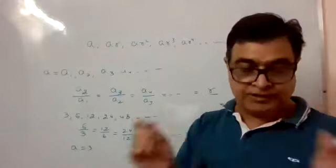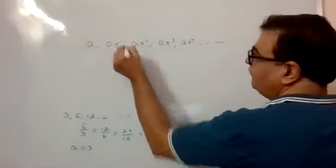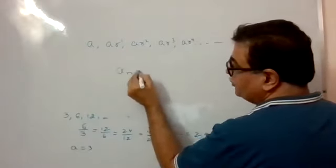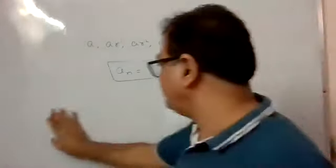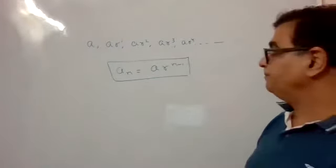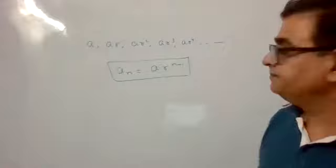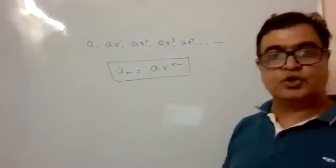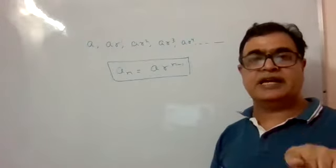Note here: the second term has power 1, third term power 2, fourth term power 3, fifth term power 4. So the nth term is AR^(n-1) — one power less than n. This is the formula to remember for geometrical progression: nth term = A·R^(n-1), just as in AP it was A+(n-1)D.